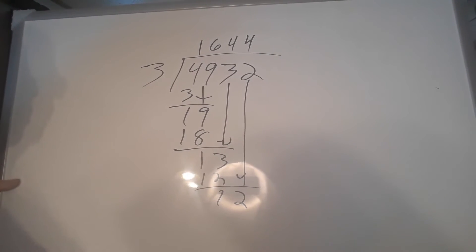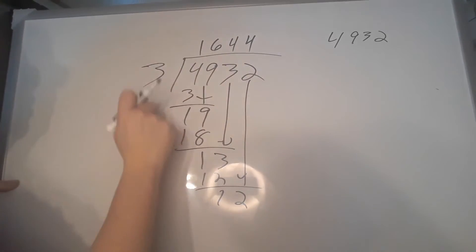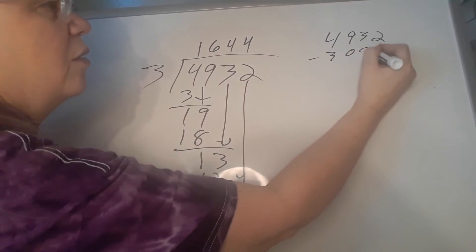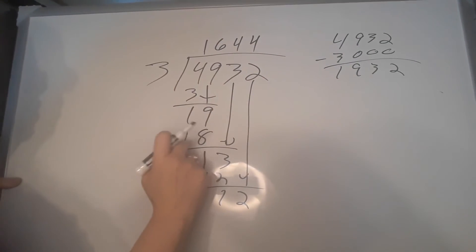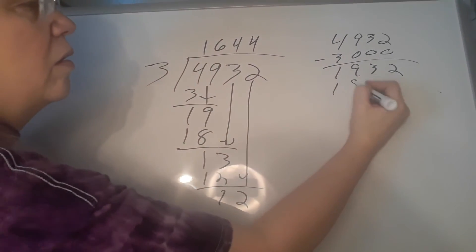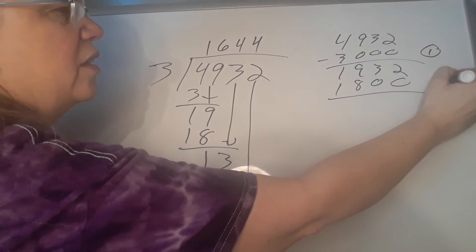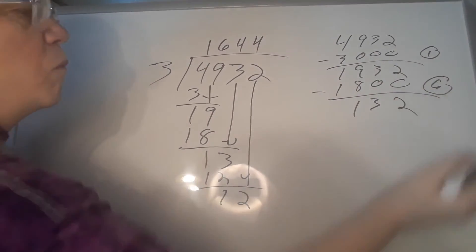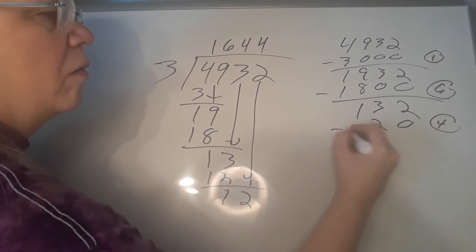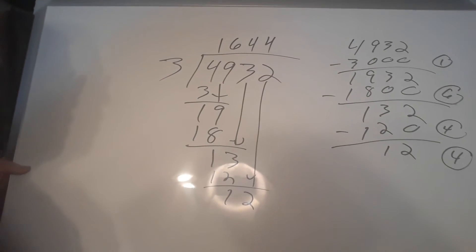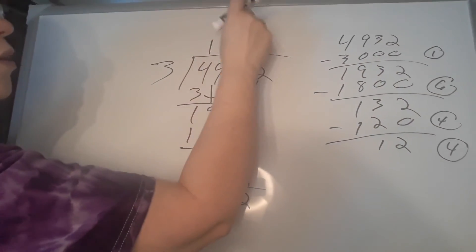Let's look at what we're doing when we do this. We have 4932. When we write that first 1, that's actually 1000 — 1000 times 3 is 3000, so we're subtracting off 3000, and we get 1932. Then the 6 is actually 1800, because it's actually 600 times 3. Now the 4 — it's actually 40. 40 times 3 is 120. And our last 4. So we're subtracting off as we figure out what the number in each position is.